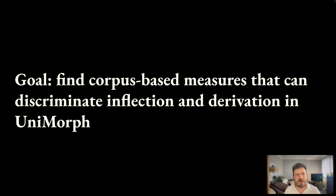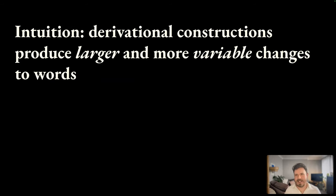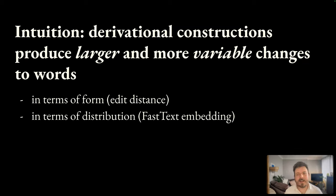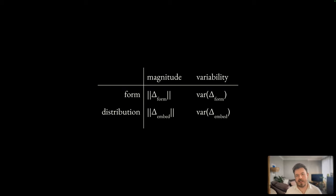By using corpus-based measures, we hope that we can consider a larger range of languages and constructions than previous work in theoretical linguistics and provide a different perspective on the debate. To get such corpus-based measures, we focus on the intuition that derivational constructions produce larger and more variable changes to words — in terms of form, where we measure distance by edit distance between the written form of the words, and in terms of distribution, where we measure the distance in distribution with the Euclidean distance between fastText embeddings of the words. This produces four measures: the magnitude of change in form and distribution, and the variability of that change itself.